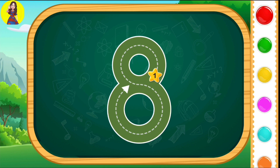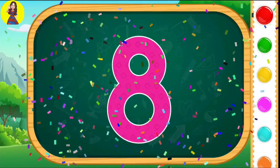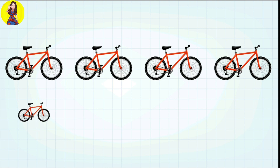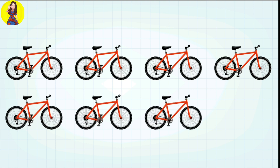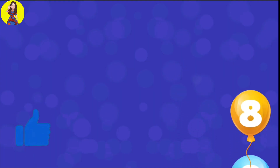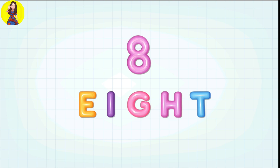Eight. E-I-G-H-T. Eight. One, two, three, four, five, six, seven, eight. Eight cycles. Tap the balloons. Eight. Let's go. E-I-G-H-T. Eight. Nine.